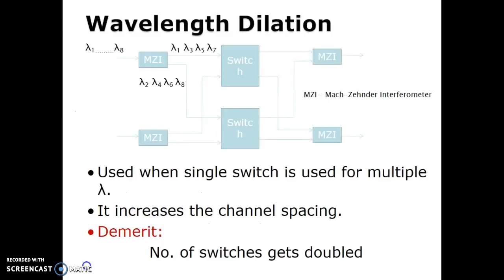Wavelength dilation: this diagram shows wavelength dilation. It is used when a single switch is used for multiple wavelengths, and it increases the channel spacing. The demerit is that the number of switches gets doubled, which is also a problem here.